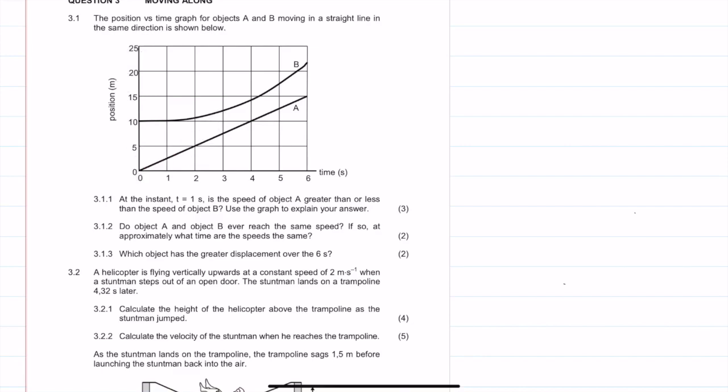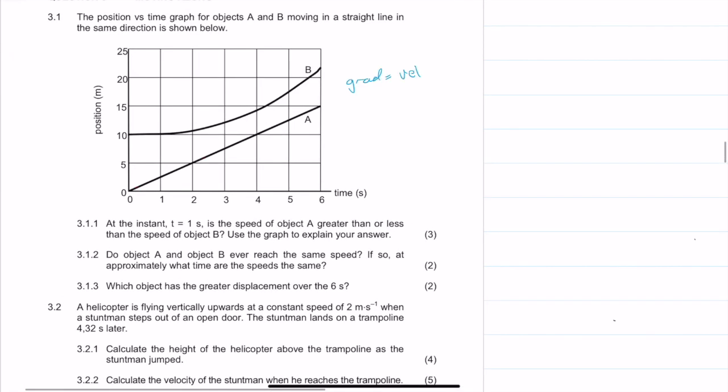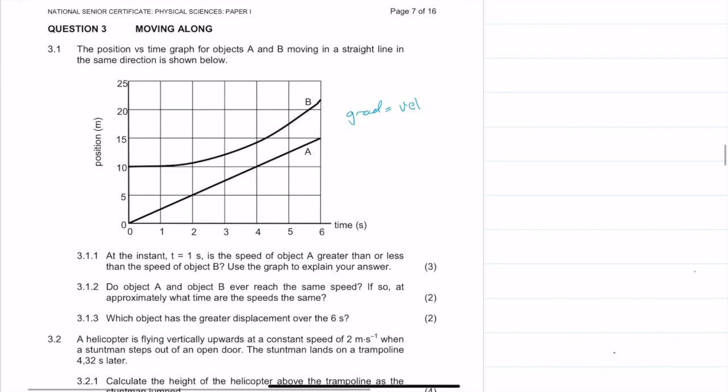The position time graph for object A and B moving in a straight line in the same direction is shown below. We have a position time graph. Something we should note is that the gradient of a position time graph gives us our velocity. So that might come in handy when you're answering some questions.